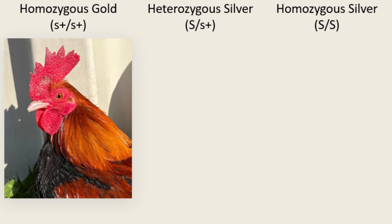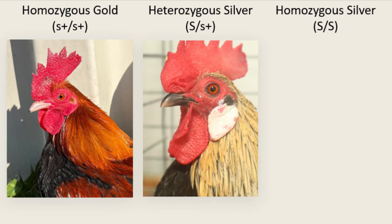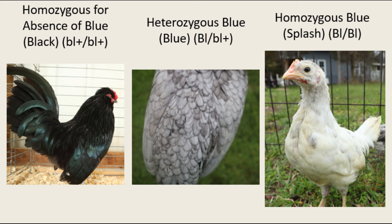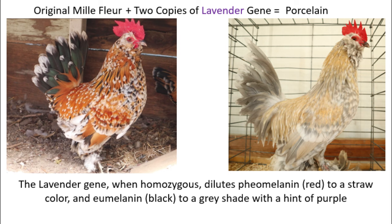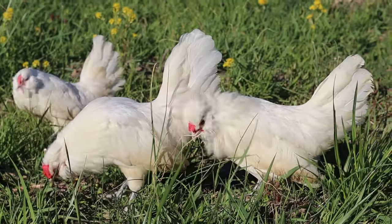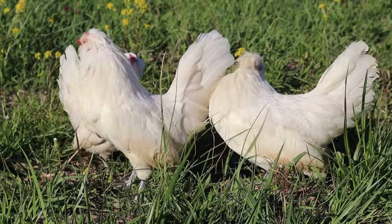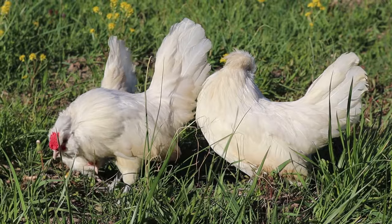For example, the silver gene dilutes only phaeomelanin, turning it into a straw color when heterozygous and into silver when hemizygous or homozygous, because it is sex-linked. Another dilution gene, the blue gene, in one copy dilutes only eumelanin into a shade of gray. And the lavender gene in two copies dilutes both phaeomelanin and eumelanin into straw-like and lavender shades. The only time you do not see eumelanin or phaeomelanin is when a bird is white, which is the absence of color.